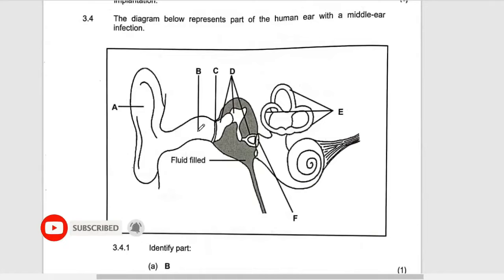You need to know pinna, auditory canal, tympanic membrane, the ossicles because there are three, semicircular canal, oval window, and then Eustachian tube which is filled up with the fluid.